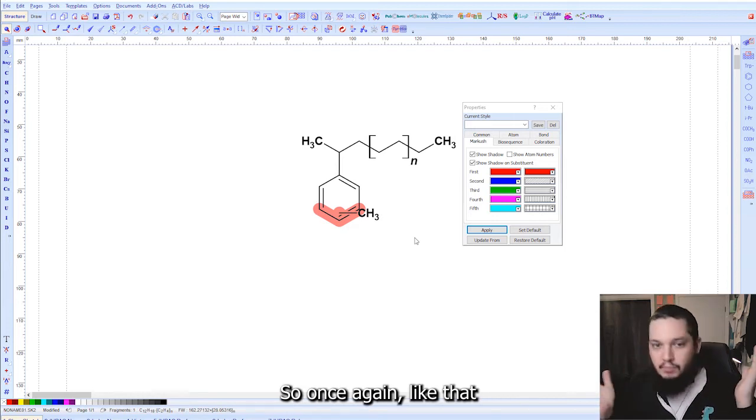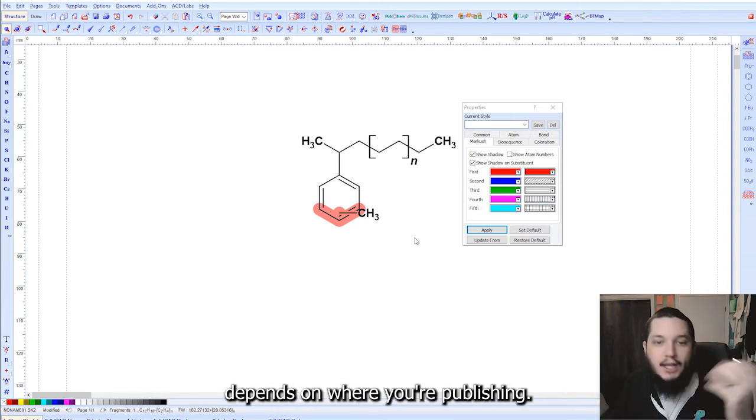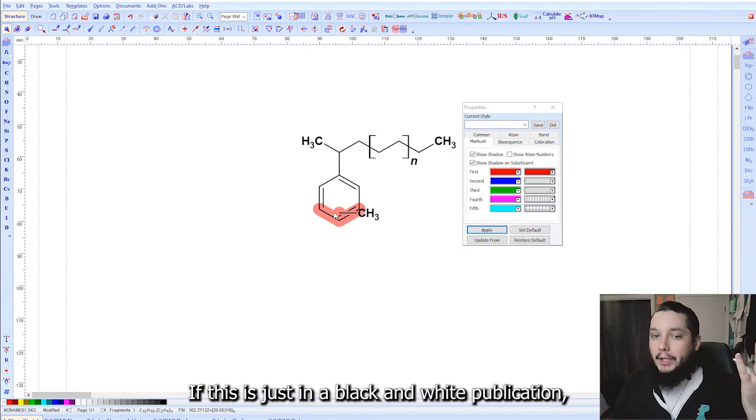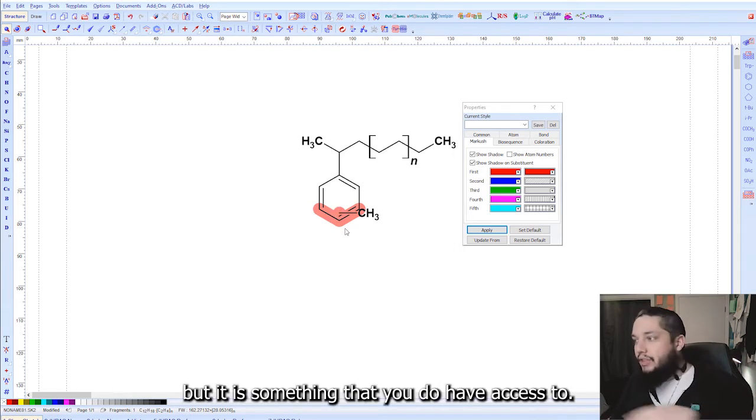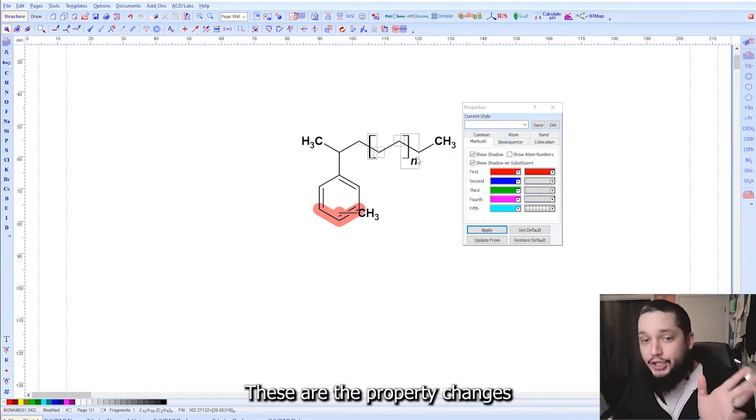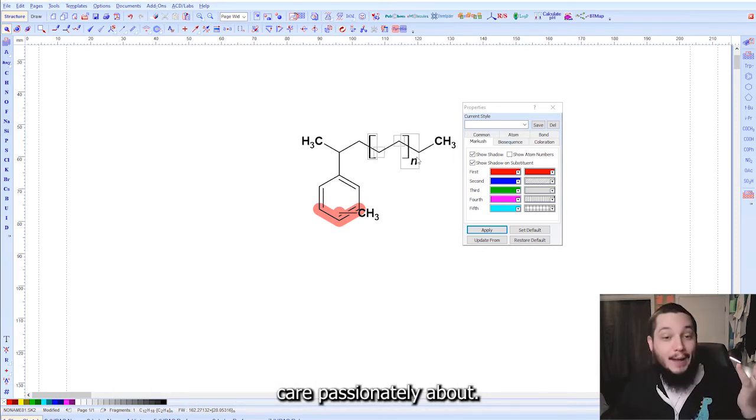So once again, that depends on where you're publishing. If this is just in a black and white publication, you can imagine this is pretty hard to read. But it is something that you do have access to these property changes if that's something that you care passionately about. So hopefully that's all you need to know about Markush structures.